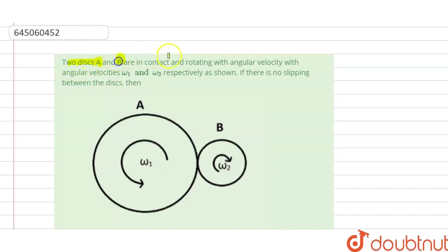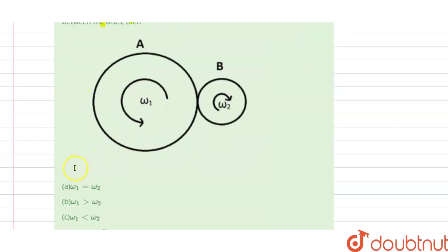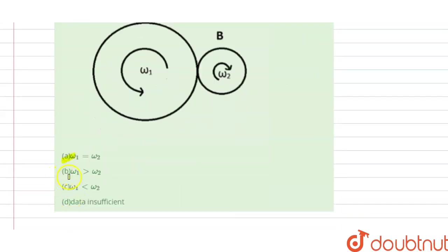Two discs A and B are in contact and rotating with angular velocities omega 1 and omega 2 respectively, as shown in the figure. If there is no slipping between the disc, then we have to give the relation between omega 1 and omega 2. Options A, B, C, D are given to us, so we have to find which option is correct.